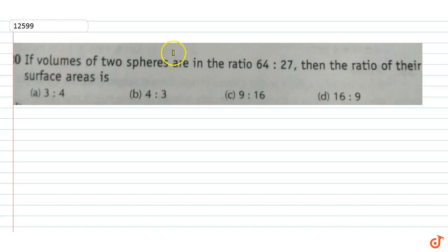If the volumes of two spheres are in the ratio 64 to 27, then what is the ratio of their surface areas? We know the volume of a sphere is 4/3 π r³.